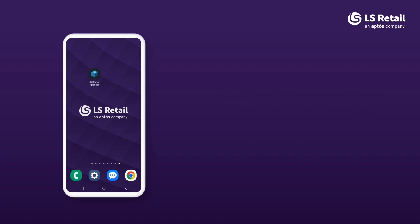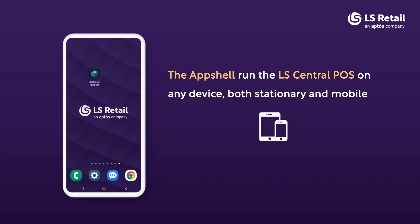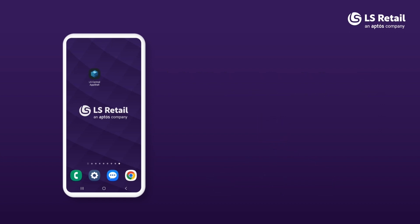I have my phone in my hand and on it I have the AppShell for LS Central. The purpose of this app is to run the LS Central POS on any device, both stationary and mobile like a phone or a tablet. The AppShell allows you to control how the POS starts, and on the Android version of AppShell on mobile devices it enables the POS to connect to a printer, scanner, and card reader — connected directly, by Bluetooth, or by network.